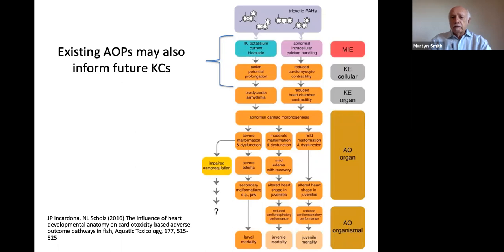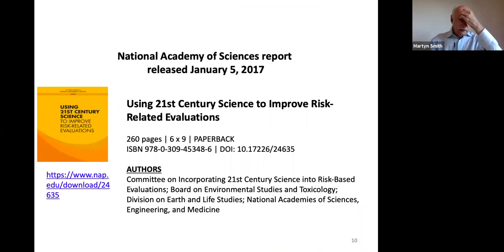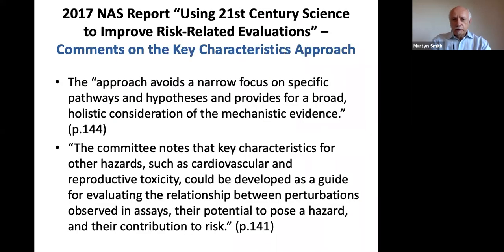The KCs could potentially help you build unbiased MOAs or AOPs when needed, and you may also learn from existing AOPs about future KCs. For example, we're currently developing the key characteristics of cardiotoxicants with a group of about 18 people, and two things that come up in an AOP — abnormal intracellular calcium handling and altered potassium currents — are both likely to be key characteristics of cardiotoxicants. The National Academy reviewed the key characteristics idea in its 2017 publication and concluded that the approach avoids a narrow focus on specific pathways and hypotheses, providing a broad, holistic consideration of the mechanistic evidence.